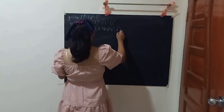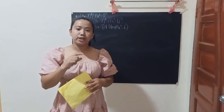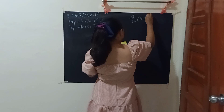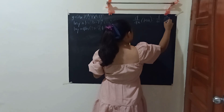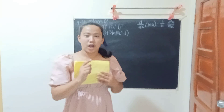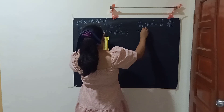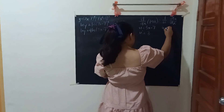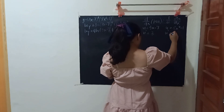Next, differentiate both sides. We can use the formula for taking the derivative of ln(u): d/dx of ln(u) equals (1/u)·(du/dx). Here u is (3x minus 7), so u prime is 3; and u is (8x squared minus 1), so u prime is 16x.